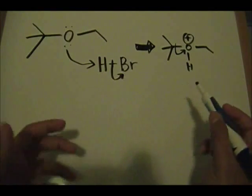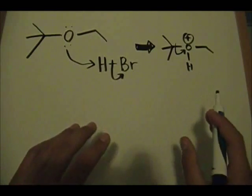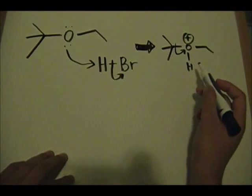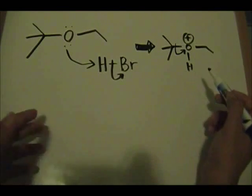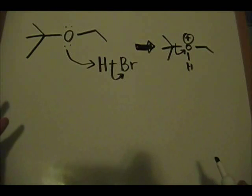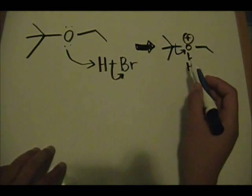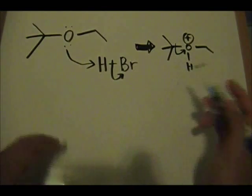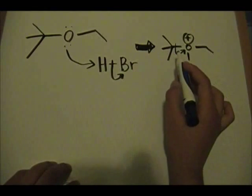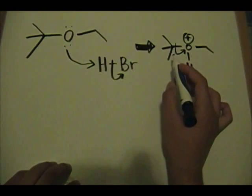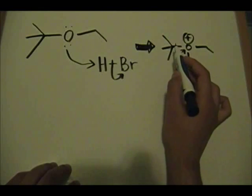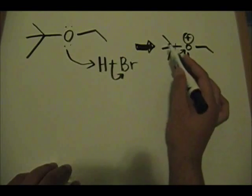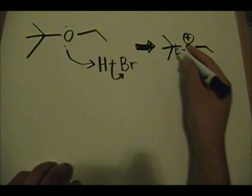So when you're doing the carbocation intermediate step, when you're producing that carbocation, think about which carbocation you want to form. You want to form the more substituted carbocation. So whenever you get to this step and you're trying to decide which pair of electrons you're trying to kick off to the oxygen to form your alcohol, remember you want to form the most substituted carbocation intermediate. So you'll kick off this pair of electrons to form a tertiary carbocation intermediate.